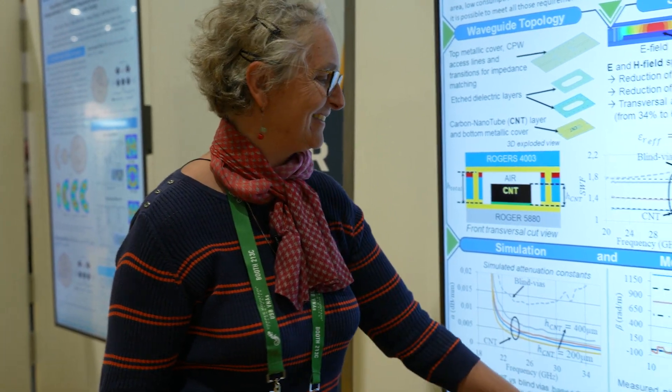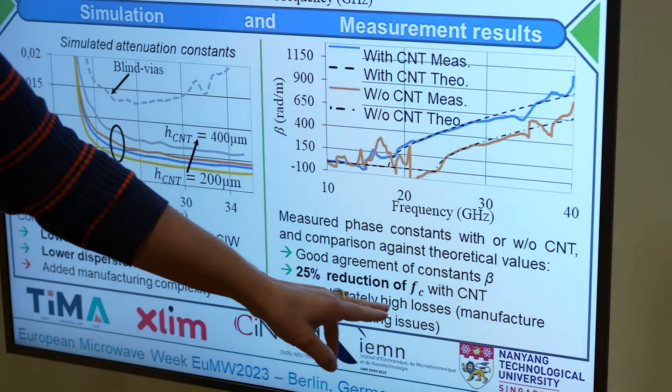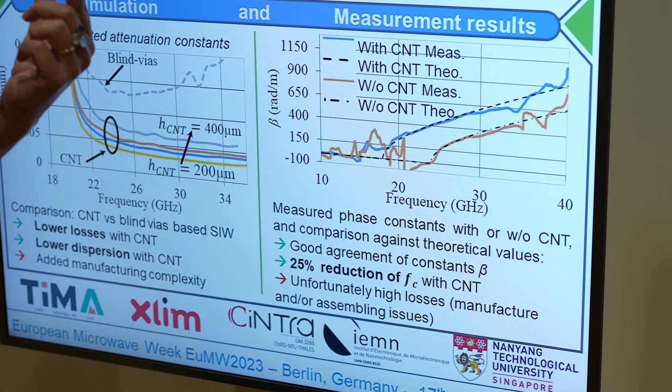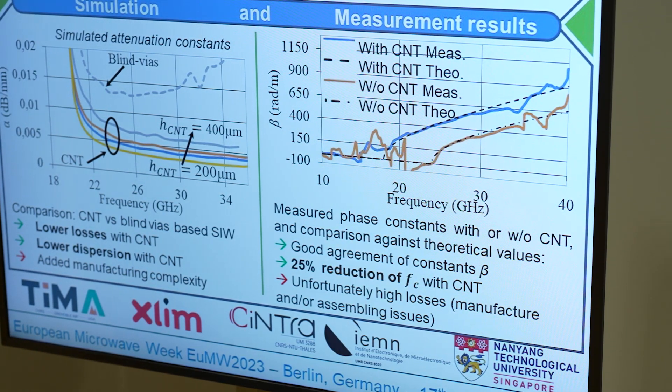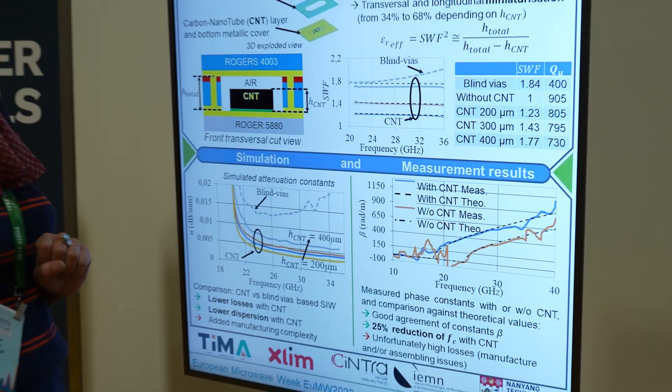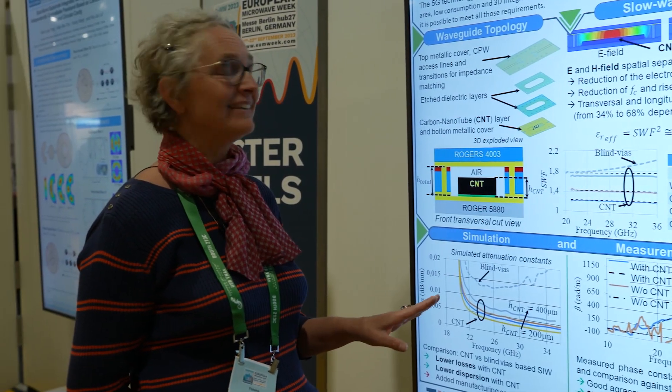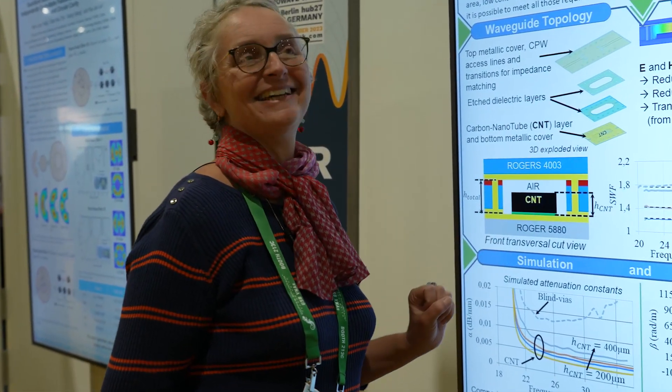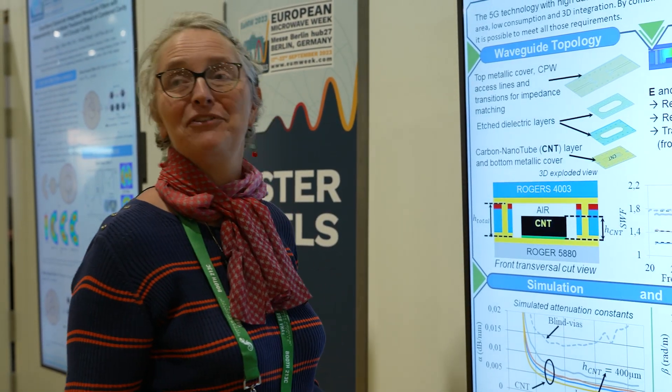Last conclusion, which will lead to perspective, is that we finally measured high losses, meaning 1 dB per millimeter. This is too high at 28 gigahertz. This can be due to the quality of manufacturing of the CNT. So perspective: anyone that is able to make very nice CNTs, dense and well-sticked, is welcome.